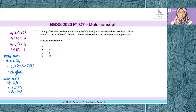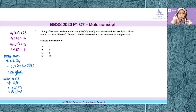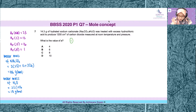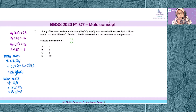Question 7 is actually testing you on mole concepts. 14.3 grams of hydrated sodium carbonate was treated with excess hydrochloric acid to produce 1200 cm³ of carbon dioxide measured at room temperature and pressure. What is the value of x?